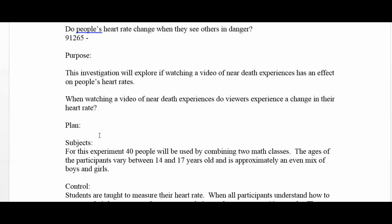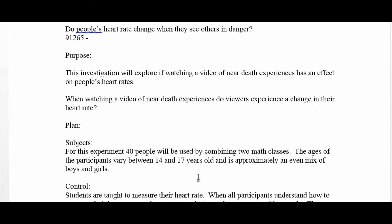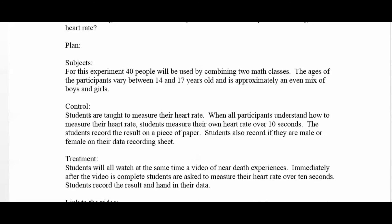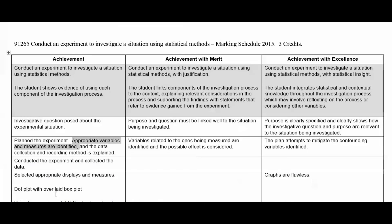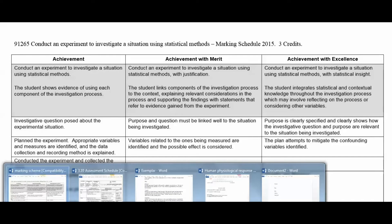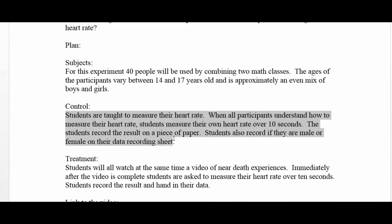Here's my plan. The subjects: for this experiment, 40 people will be used by combining two math classes. The ages of the participants vary between 14 and 17 years old, and it's approximately an even mix of boys and girls. For the control: students are taught to measure their heart rate. When all participants understand how to measure their heart rate, students measure their own heart rate over 10 seconds and record the result on a piece of paper. Students also record if they are male or female on their data recording sheet. This takes care of the data collection and recording method requirement.